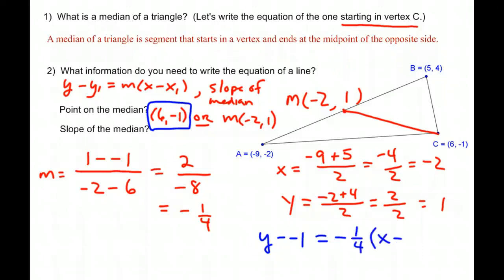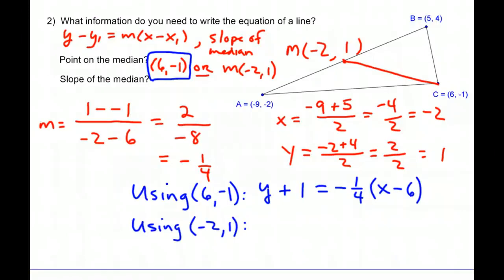X minus the X coordinate of the point that I chose to use. As you can see, I've cleaned up the Y minus negative 1 to write Y plus 1. And I'm now going to just go ahead and get the other equation that you could have gotten.